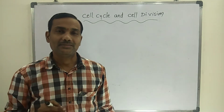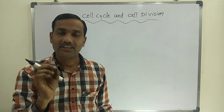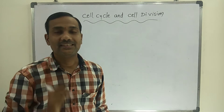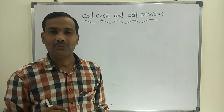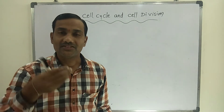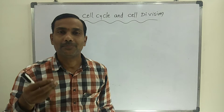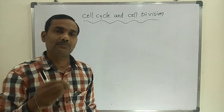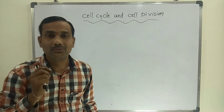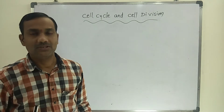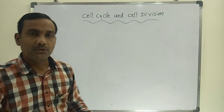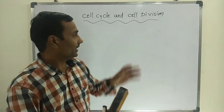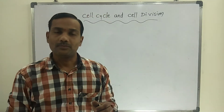Multicellular organisms — their life cycle begins from a single cell, that is the zygote. That zygote undergoes repeated mitotic divisions, which helps in the formation of one new individual organism. During cell division, the cell cycle plays a very important role.